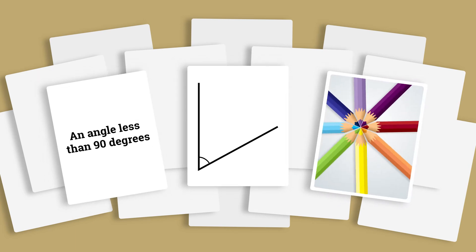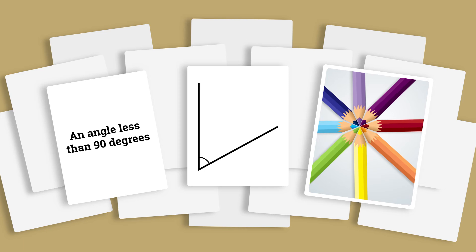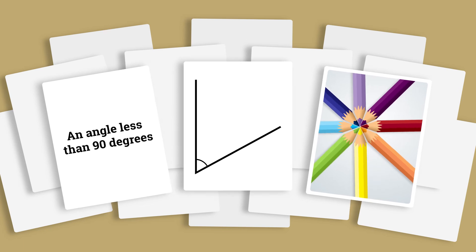Each group is given about 20 cards. Some cards have angles, some cards have definitions, some cards show real-world examples of the different angle types. The card sort enables students to work on principles of recognition, definition, and classification.